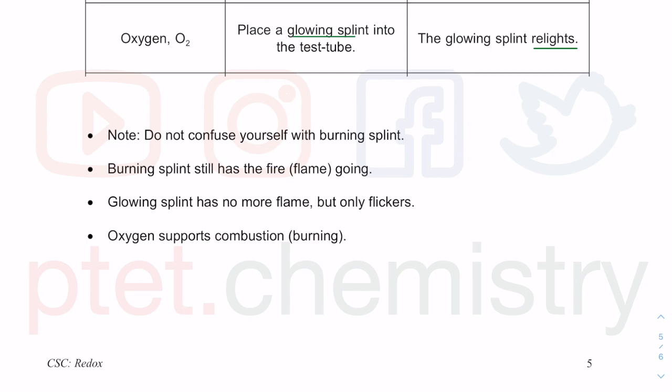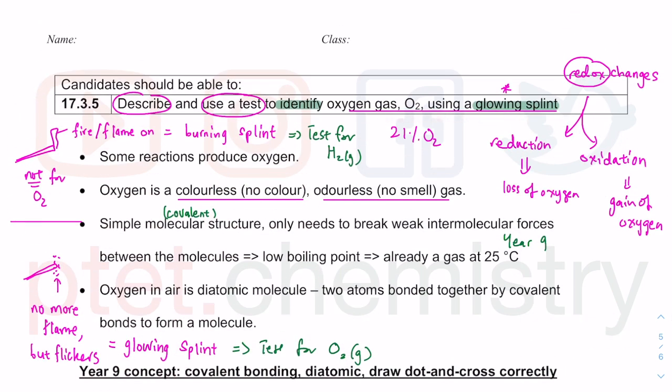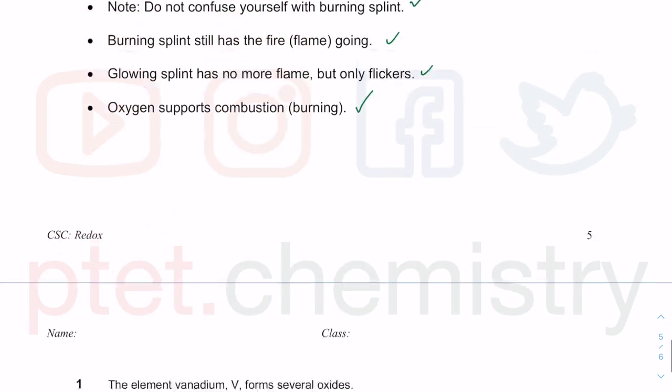Do not confuse with burning splint. Burning splint has the flame still going. Oxygen supports combustion, that's why the glowing splint relights. We will revisit this idea on the test for gases in practical experiments and chemical analysis, including identification of not only oxygen but hydrogen and many other gases.